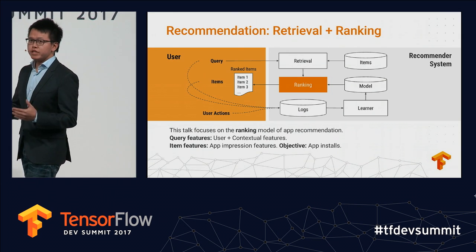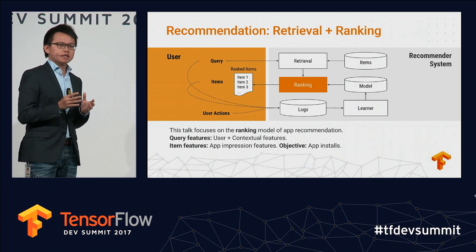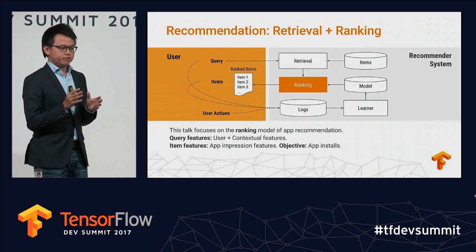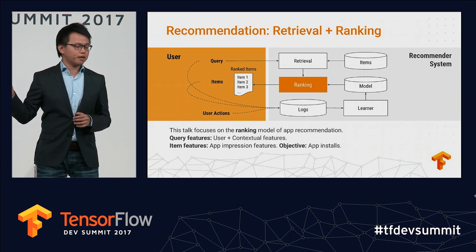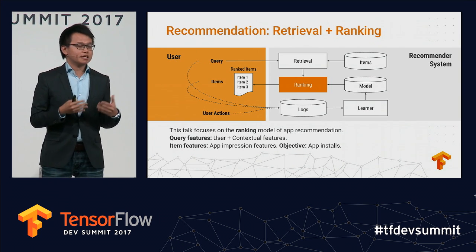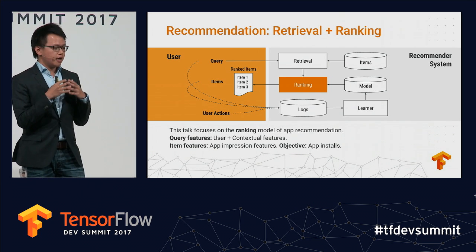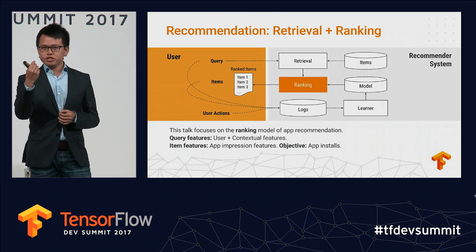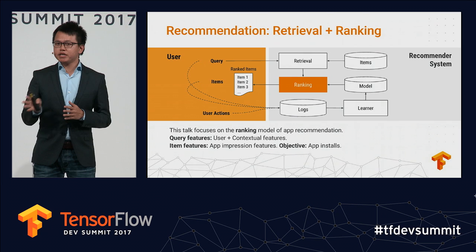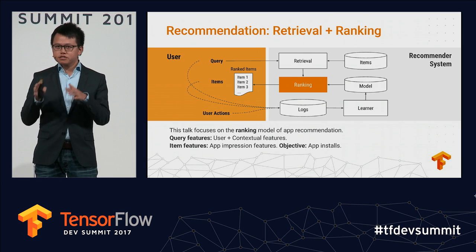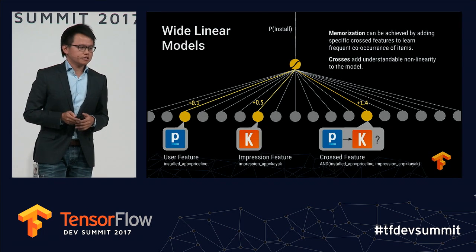This talk will focus on how we use wide and deep learning to solve the ranking model of this app recommendation problem. The query features are user and contextual features; the item features are the app impression features shown on the user's phone. The objective we're optimizing for is app installs — if the user installs the app, the label is 1; otherwise, the label is 0.